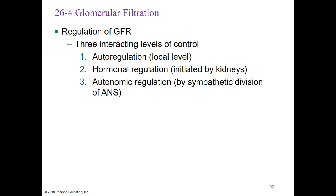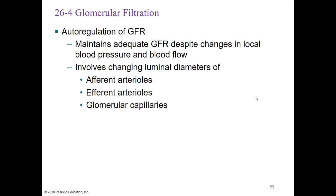Auto-regulation of the GFR maintains adequate GFR despite changes in local blood pressure and blood flow by changing the luminal diameter of the afferent arterioles, efferent arterioles, and glomerular capillaries. If the afferent arterioles vasoconstrict, that slows blood flow into the glomerulus, which will slow the GFR and filtrate production.